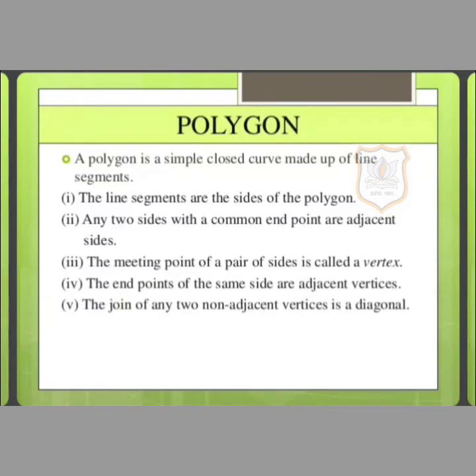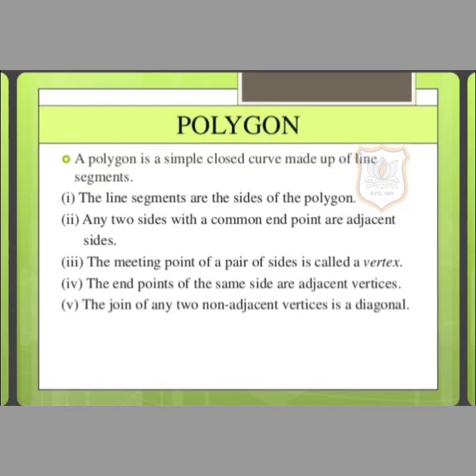The line segments are the sides of the polygon. Any two sides with a common endpoint are adjacent sides. The meeting point of a pair of sides is called a vertex. The endpoints of the same side are adjacent vertices. And the join of any two non-adjacent vertices is a diagonal.